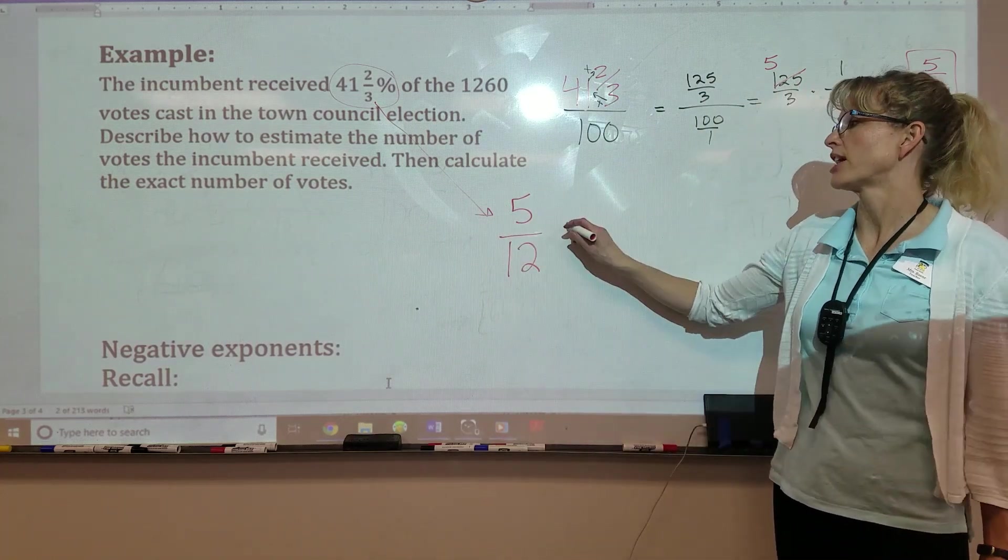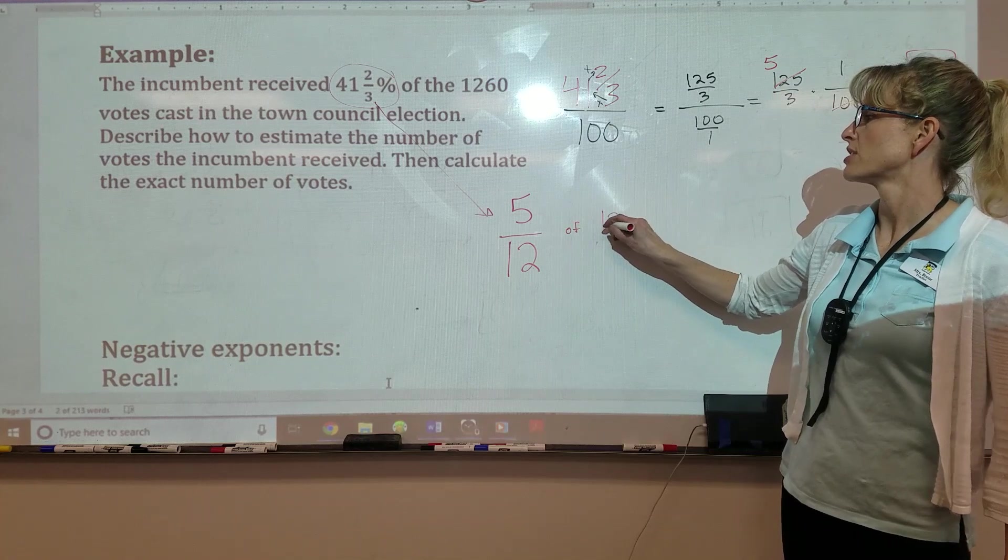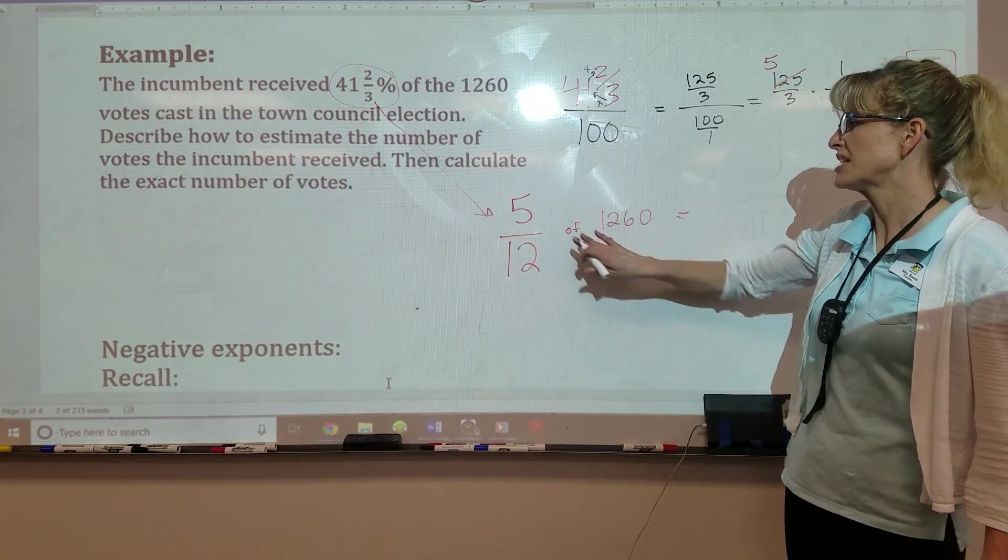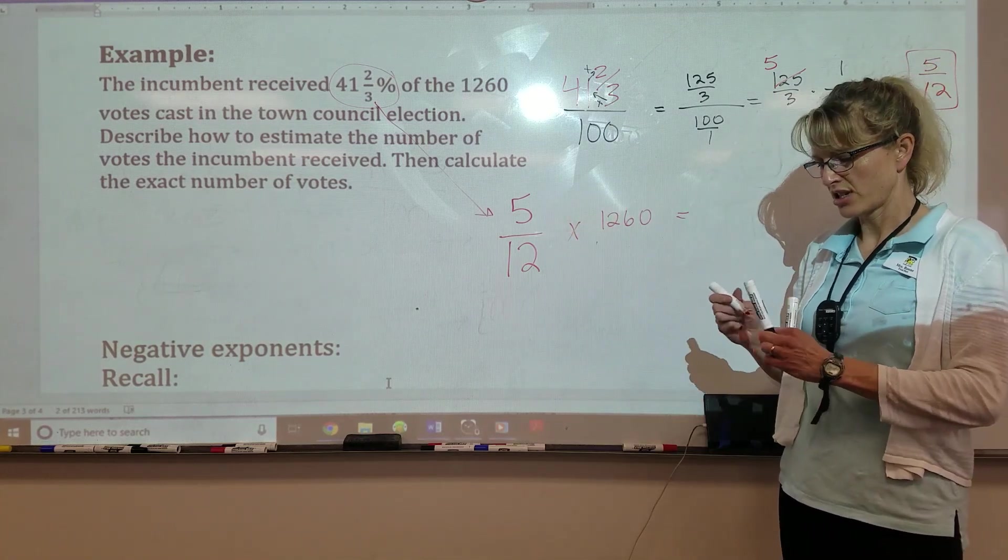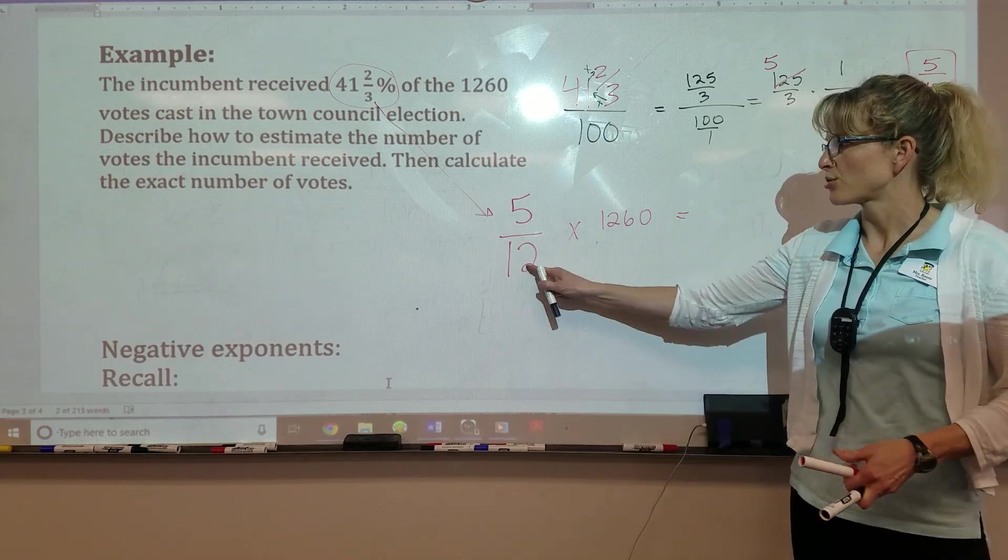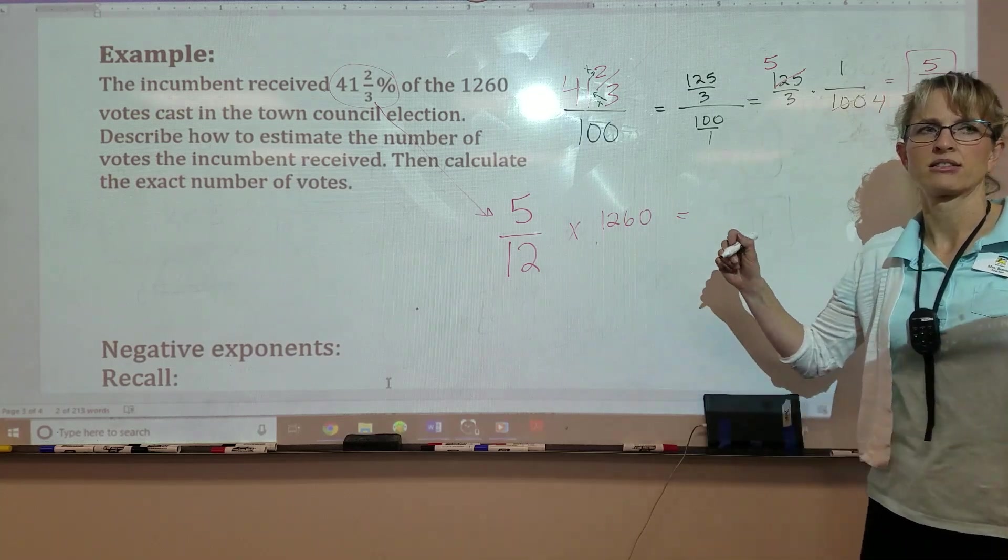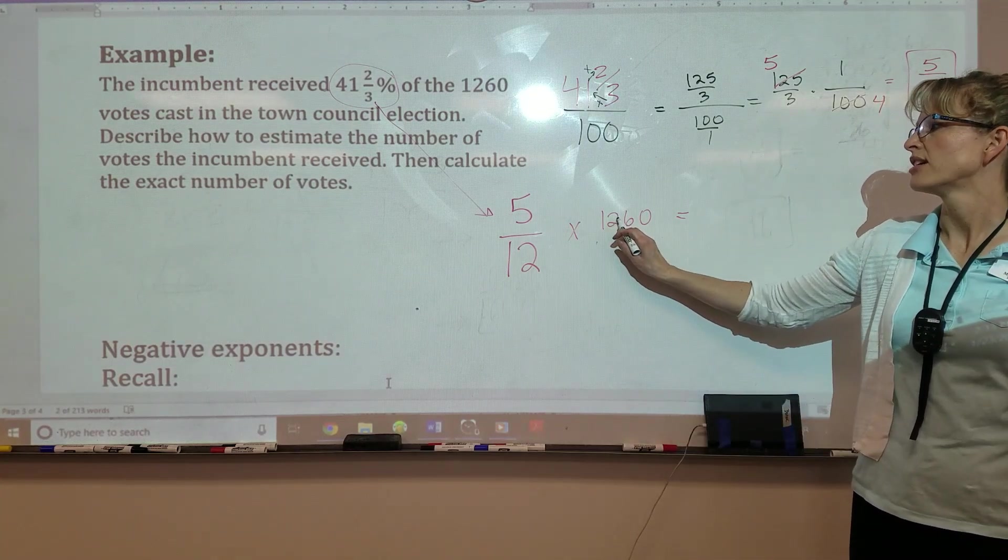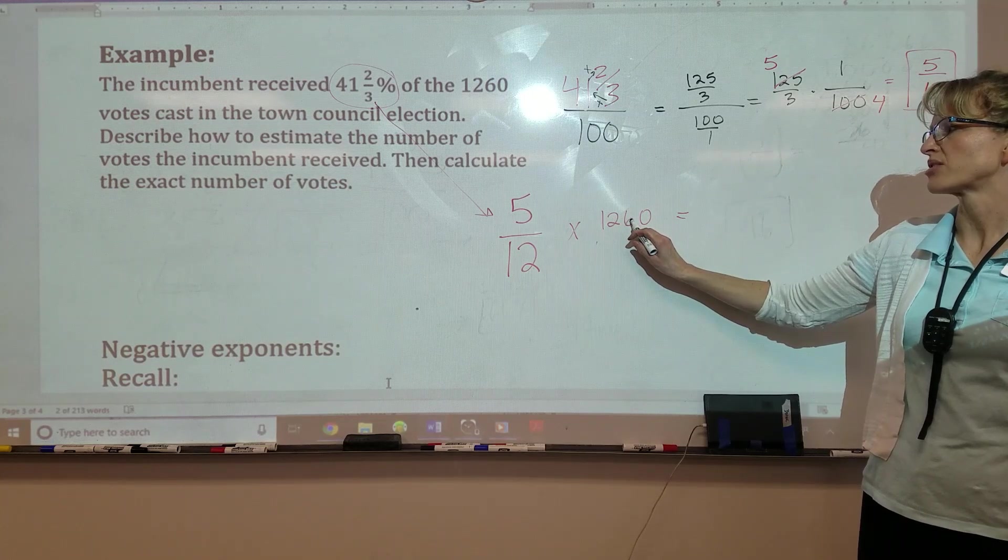So I really just need to find 5 twelfths of 1260. Of means times. So let's clean that up. Do you guys see this 12 into 1260? It's going to go once. Then I've got to move over a digit.